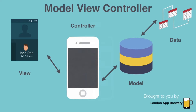These three core components come together to make up what you see as the app. This is known as the Model-View-Controller design pattern, and it's a very common design pattern that people adhere to when creating iPhone apps.